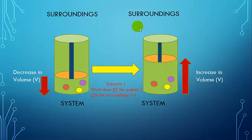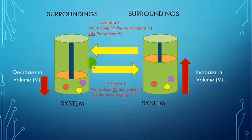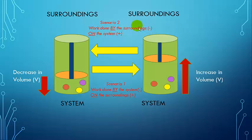The work function for the surroundings takes an equal and opposite positive value. In Scenario 2, the surroundings push the piston, causing a decrease in volume. When that happens, the surroundings are doing work on the system. The work function for the surroundings is negative and the work function for the system is positive, of equal and opposite value.